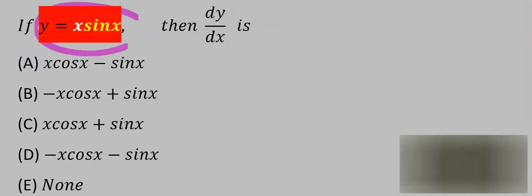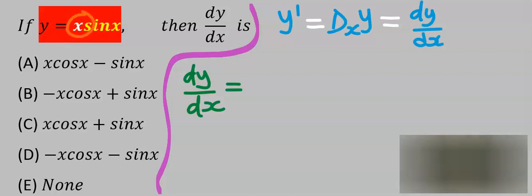Let's find the derivative of this function. The first step is to keep x constant. Next we're going to differentiate sine x. The derivative of sine x is cos x.